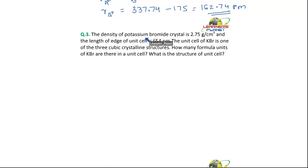The density of potassium bromide crystal is 2.74 gram per cubic centimeter and the length of edge of the unit cell is 654 picometer.